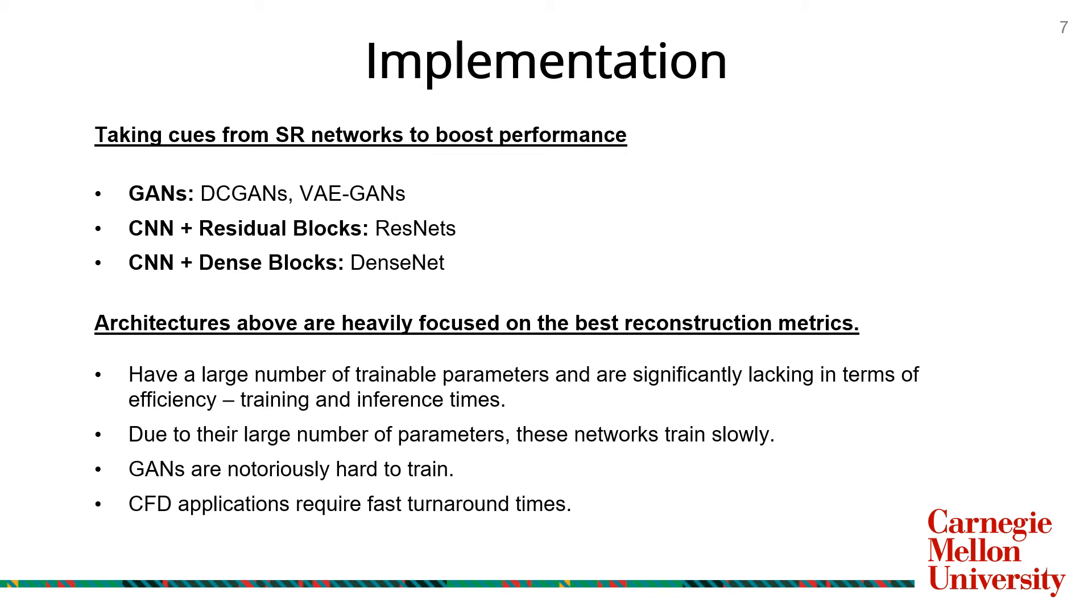On experimenting with these different architectures, we found that they were highly effective in image reconstruction but were too heavily focused on attaining the best reconstruction metrics. Consequently, these architectures have a large number of trainable parameters and are significantly lacking in terms of computational efficiency. These large networks take really long to train or infer and are notoriously hard to converge.